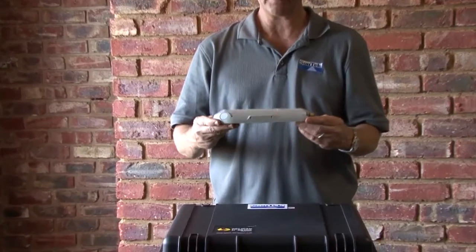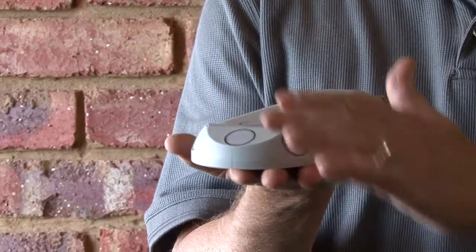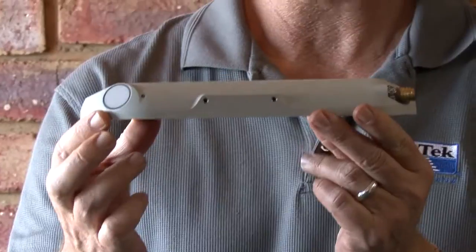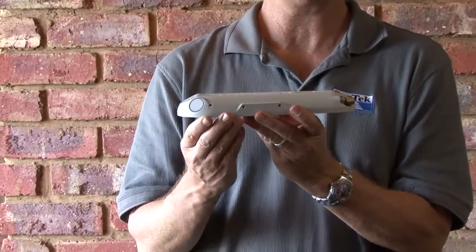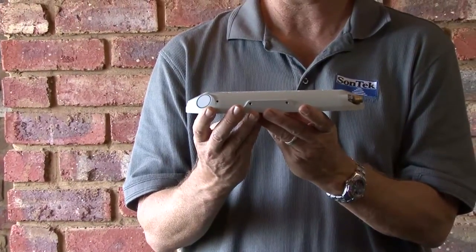As you can see, it's a very low profile. We've designed it this way to provide minimum drag in the bottom of the canal. That allows you to mount it much lower to the channel bottom, and also it disturbs less flow, so it allows you to measure accurately in much more shallow water than previous.